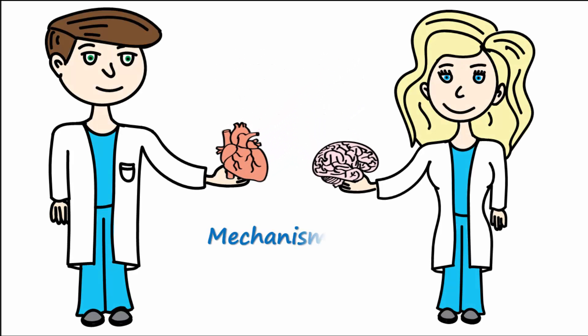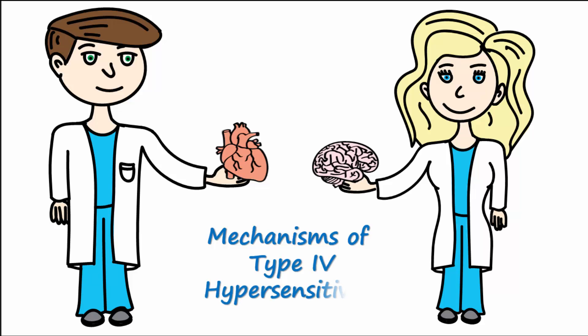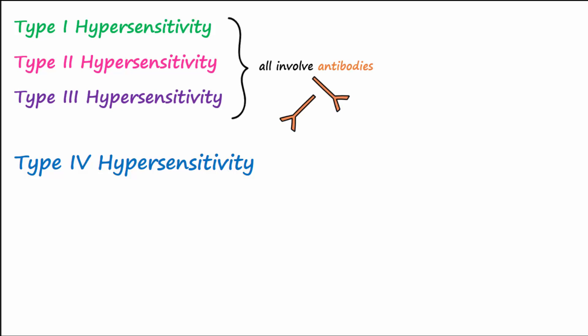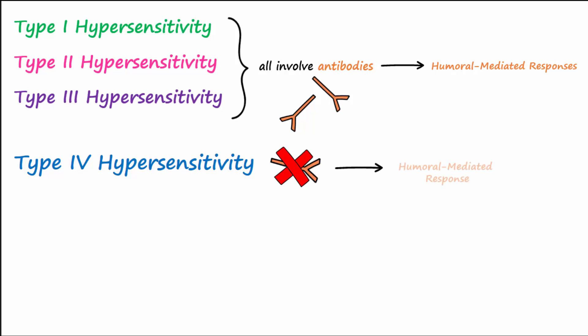Let's discuss the mechanisms of a type 4 hypersensitivity reaction. In the previous videos discussing types 1, 2, and 3 hypersensitivity, you may have noticed that all three types involved antibodies. For this reason, they are classified as humoral mediated responses. In contrast, a type 4 hypersensitivity reaction does not involve antibodies and is therefore not a humoral mediated response — it is a T cell mediated response.